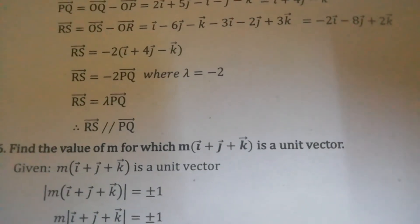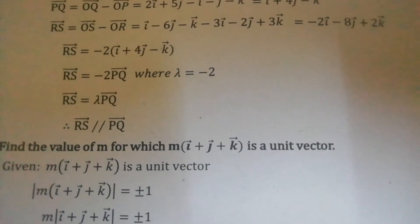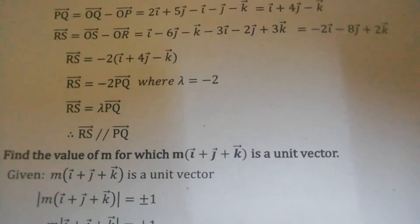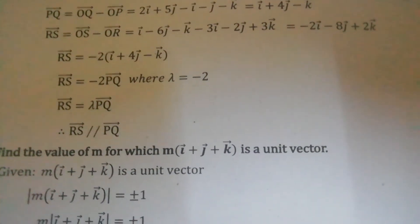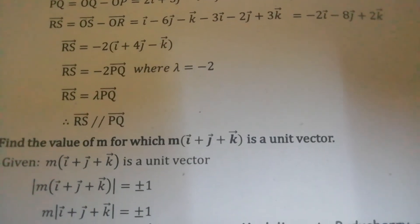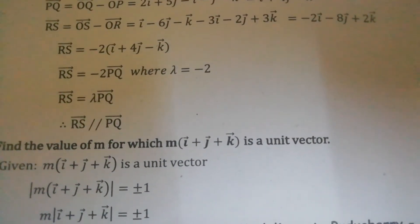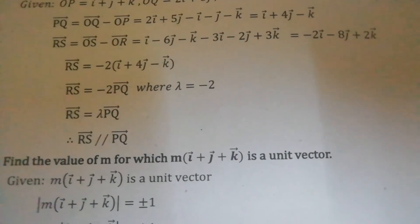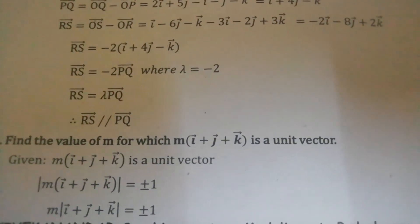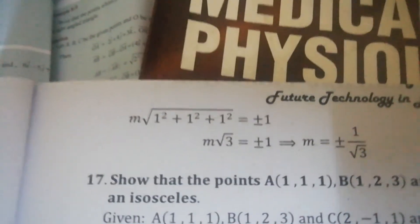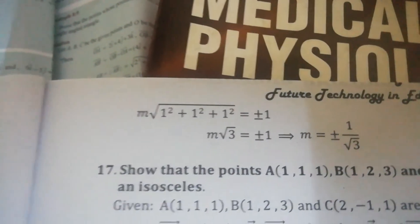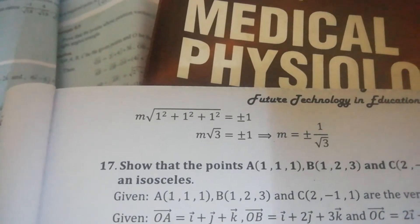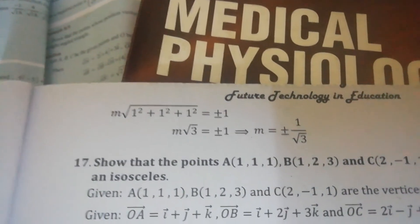Find the value of m for which it is a unit vector. Unit vector means modulus value is 1. Take the modulus: m times root of 1 squared plus 1 squared plus 1 squared equal to plus or minus 1. So m times root 3 equals plus or minus 1, therefore m equals plus or minus 1 by root 3.